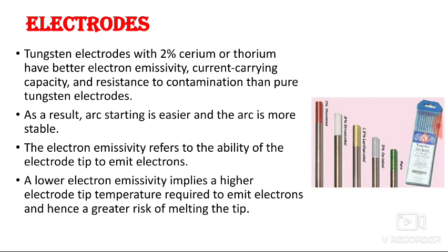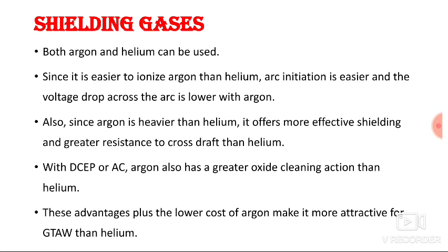That is all about the electrodes used in GTAW. For shielding gas, both argon and helium can be used, but argon has certain advantages over helium. Since argon is easier to ionize, arc initiation is easier and the voltage drop across the arc is lower. Since argon is heavier than helium, it offers more effective shielding and greater resistance to cross drafts. With DCEP or AC, argon also has a greater oxide cleaning action than helium. These advantages plus the lower cost of argon make it more attractive for GTAW, so argon is used as shielding gas most of the time.